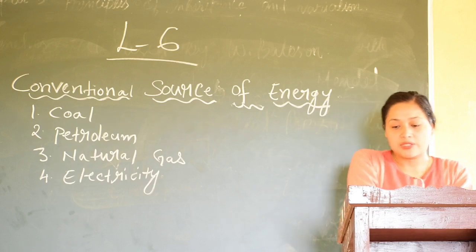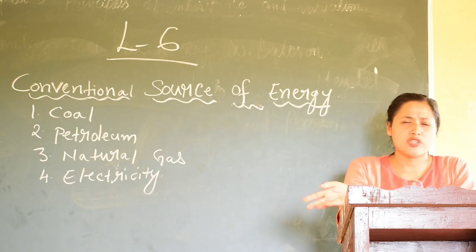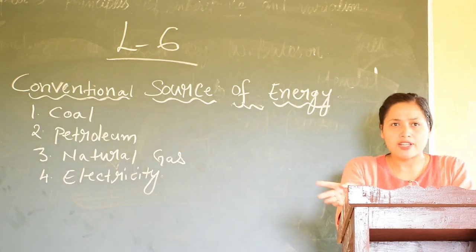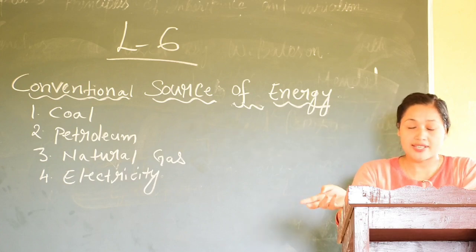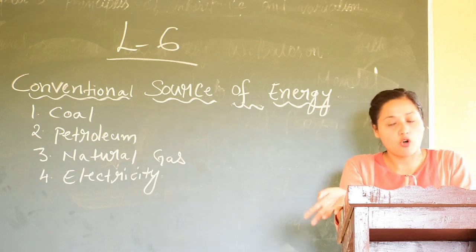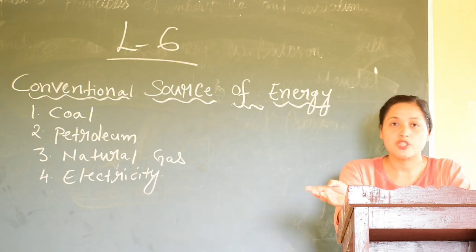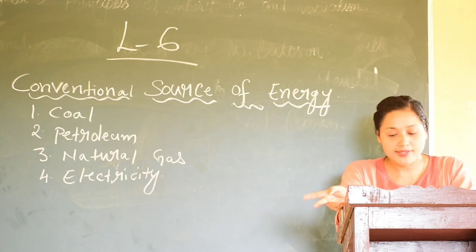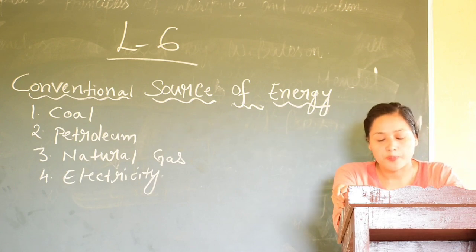Third, natural gas. This gas is one of the cleanest energy resources, found associated with petroleum. One advantage of natural gas is that it does not need a drilling process. Under natural gas, there are two types: one is LPG, used at home for domestic use, and another is CNG, used for running vehicles. The full form of LPG is Liquefied Petroleum Gas, and CNG is Compressed Natural Gas.